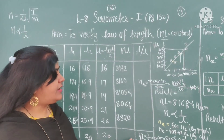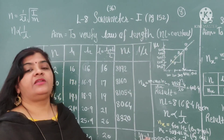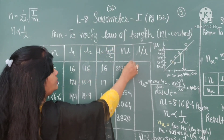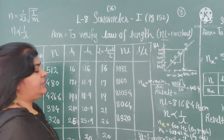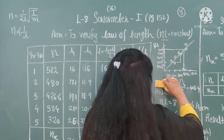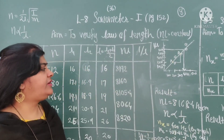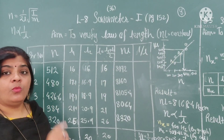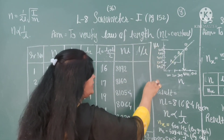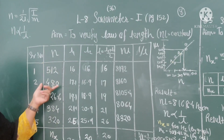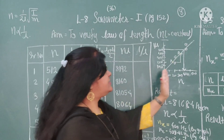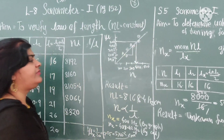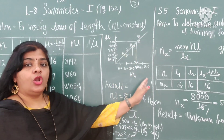From the graph also we can calculate. For the graph, we require the 1 upon L versus frequency graph. The last column is 1 upon L and the second column is frequency. Take frequency along the X axis and 1 upon L along the Y axis. Calculate the answer from the graph — take frequency along the X axis.